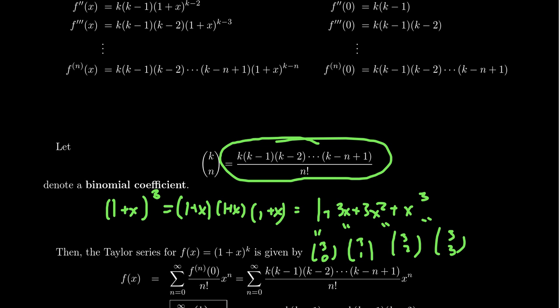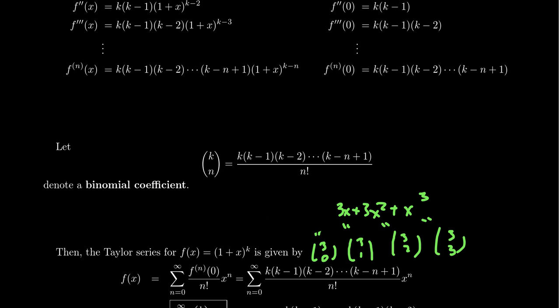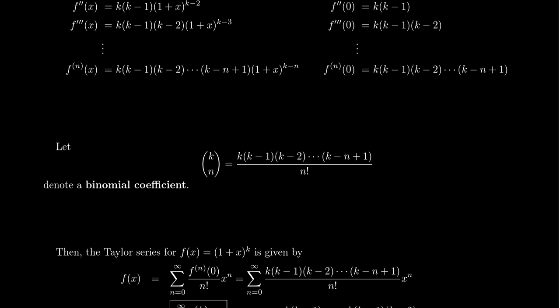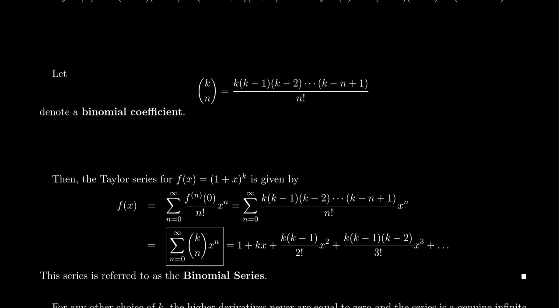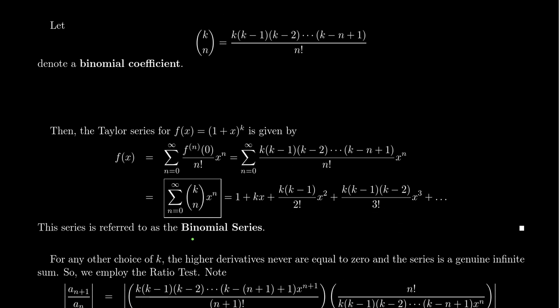What we're doing is extending the binomial theorem to include powers beyond just positive integers. Instead of (1+x)^3, we can get a formula for (1+x)^(-3) or (1+x)^(1/2). Our power k doesn't have to be a positive integer anymore. Because of this connection to the binomial theorem, this series is commonly referred to as the binomial series.